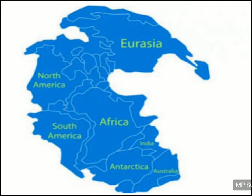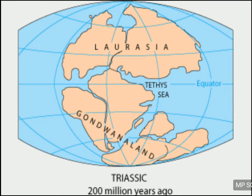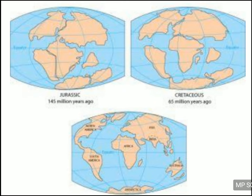The Pangaea broke into two parts — the northern part was called Laurasia or Angara land, and the southern part was called Gondwana land. Then again it broke further and with this movement the present landforms were formed. The different continents at different places which you see today were once upon a time together into one single continent. Laurasia or Angara land contained North America and Eurasia, and the rest were part of Gondwana land.